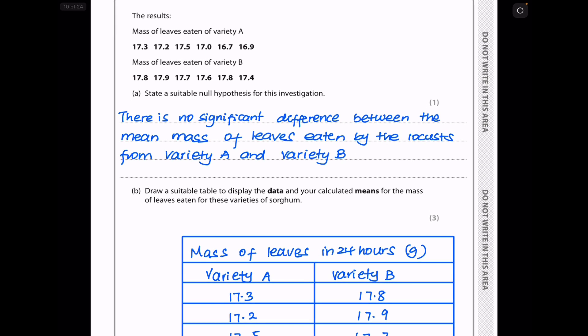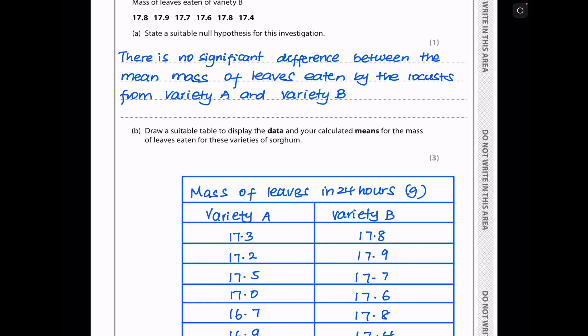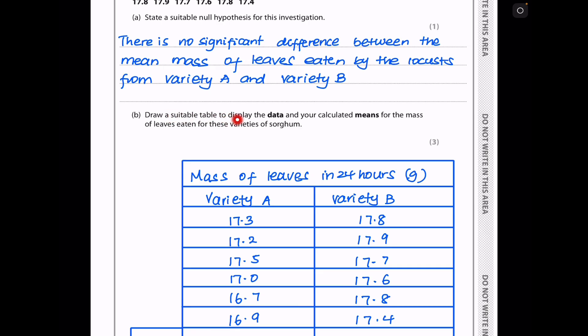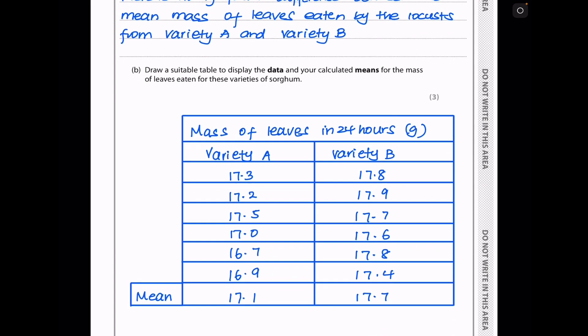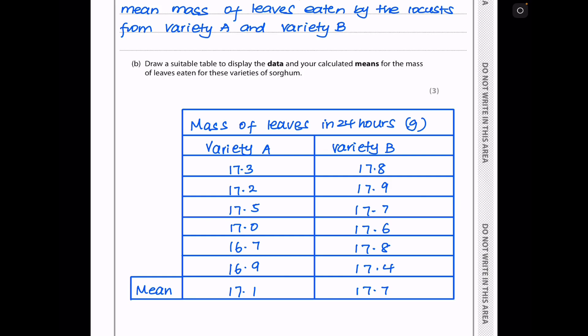In part A, they tested a suitable null hypothesis for this investigation. Because we are comparing two sets of data, I say there is no significant difference between the mean mass of leaves eaten by locusts from variety A and variety B. The next, they say draw a suitable table to display the data and your calculated means for the mass of the leaves eaten for these varieties of sorghum. When you're showing results in the table, you have to make sure there are labels as well as units. So here I have mass of leaves in 24 hours in grams, and here I have my mean. There is variety A, these are the results, and these are the results for variety B. You calculate the means by adding everything here, from 17.3 to 16.9, and then divide by the number of experimental results that were collected. I did the same thing for B, and here the mean is 17.1, while here the mean is 17.7.